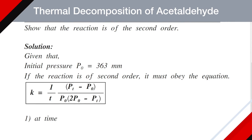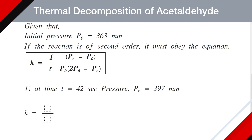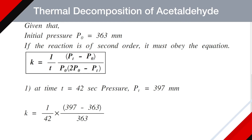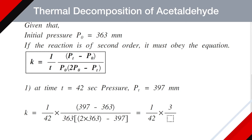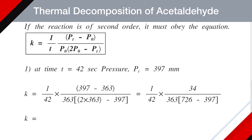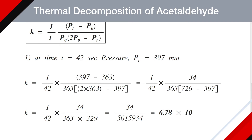For the first case at t = 42 s, Pt = 397 mm Hg: K = (1/42) × (397 − 363) / (363 × (726 − 397)) = (1/42) × 34 / (363 × 329) = 34 / 5,051,934 ≈ 6.78 × 10⁻⁶.